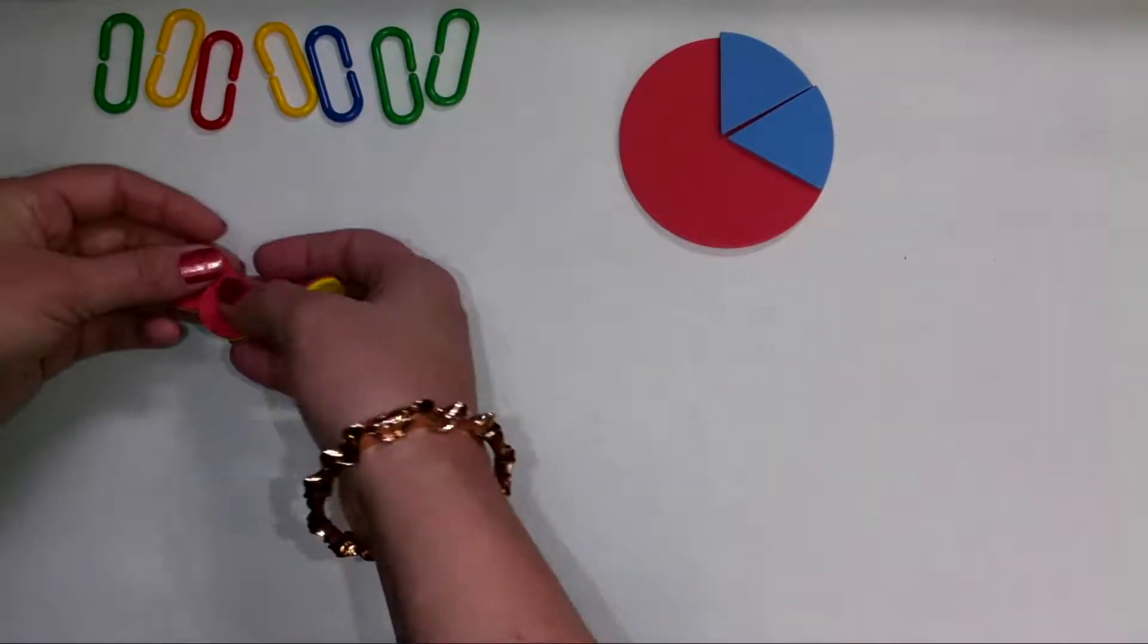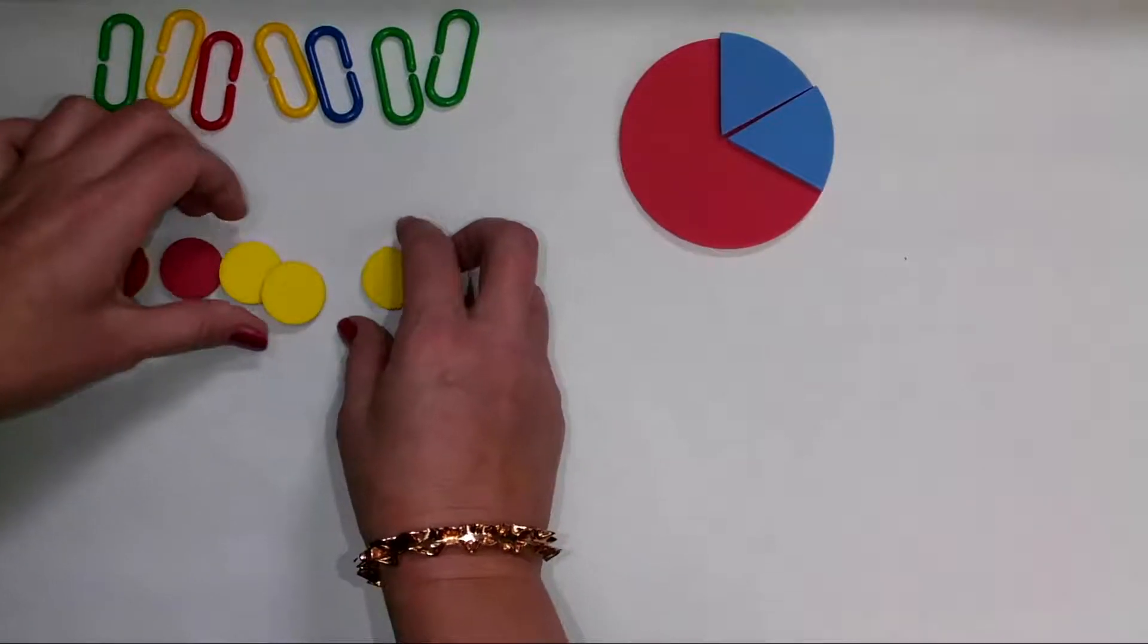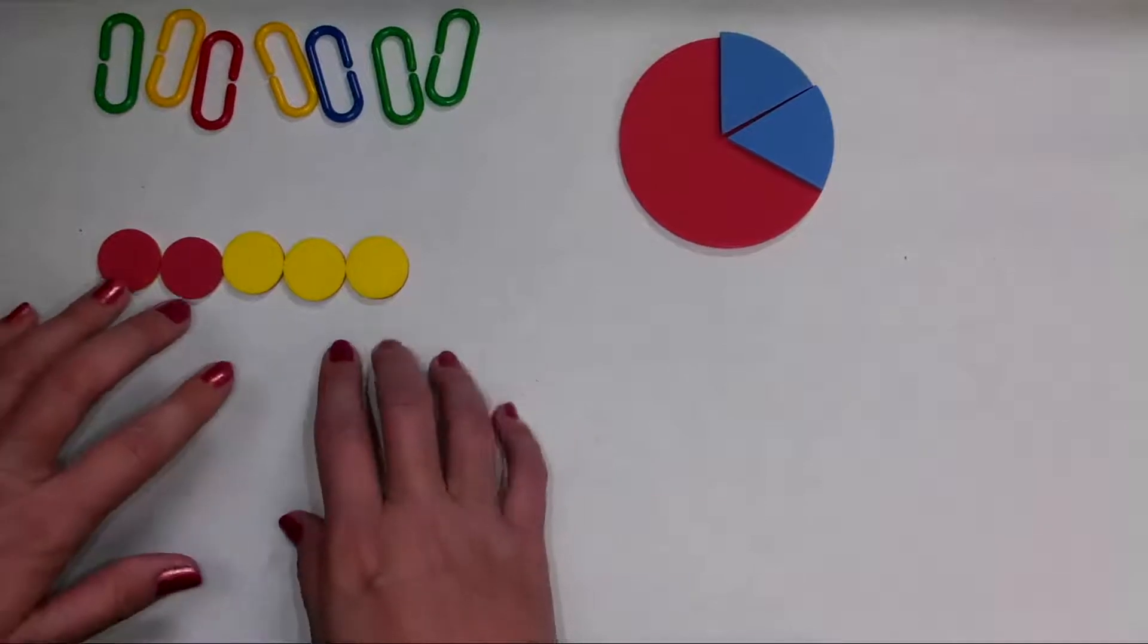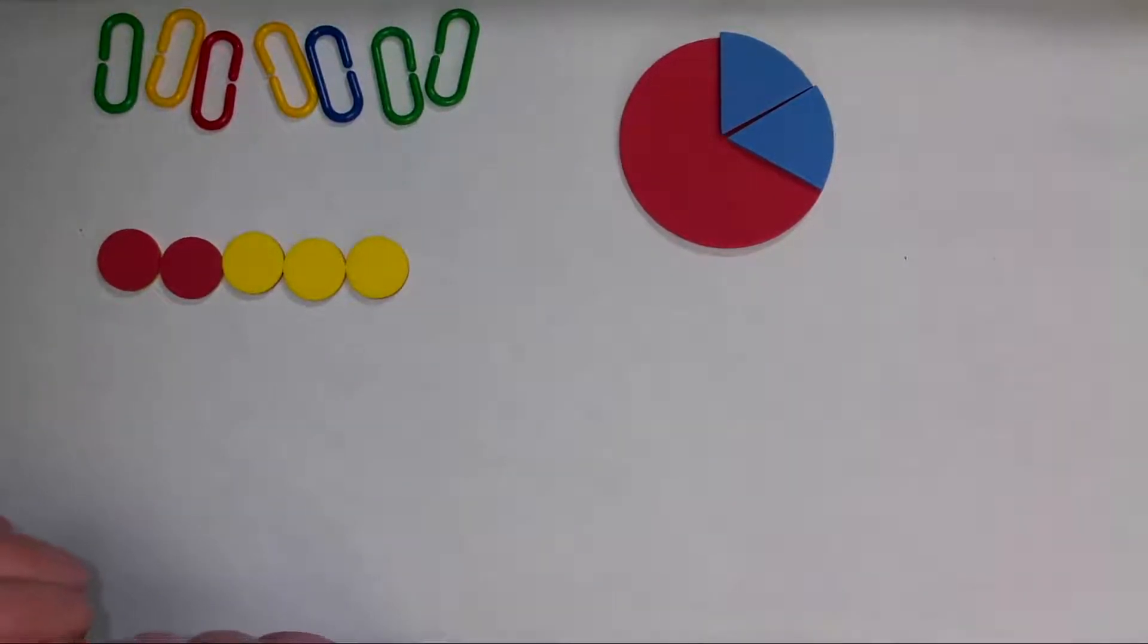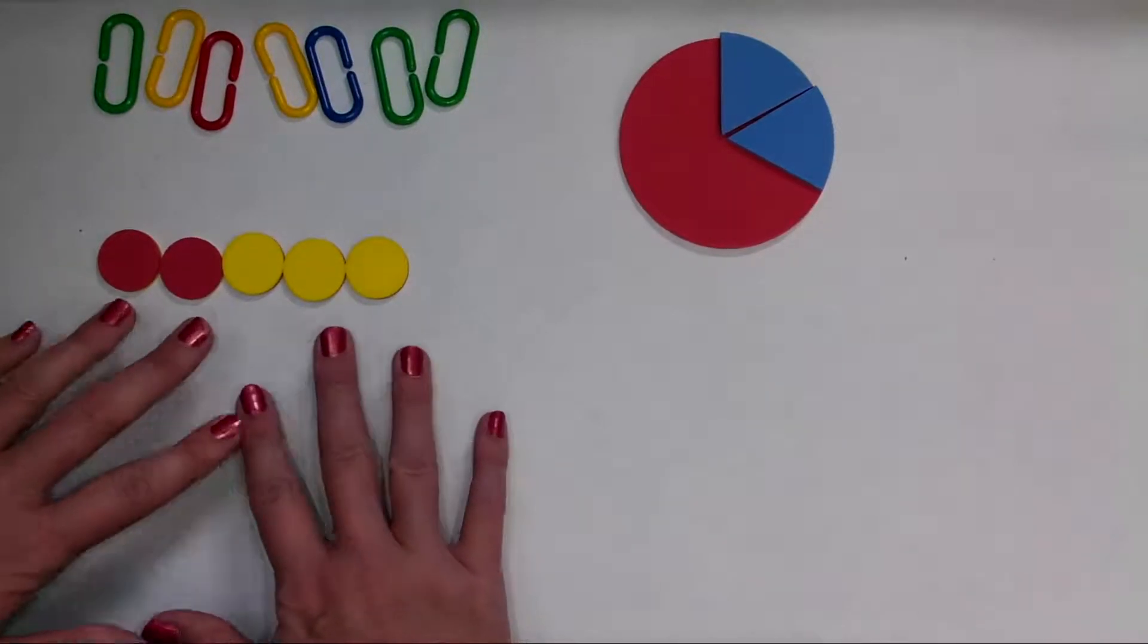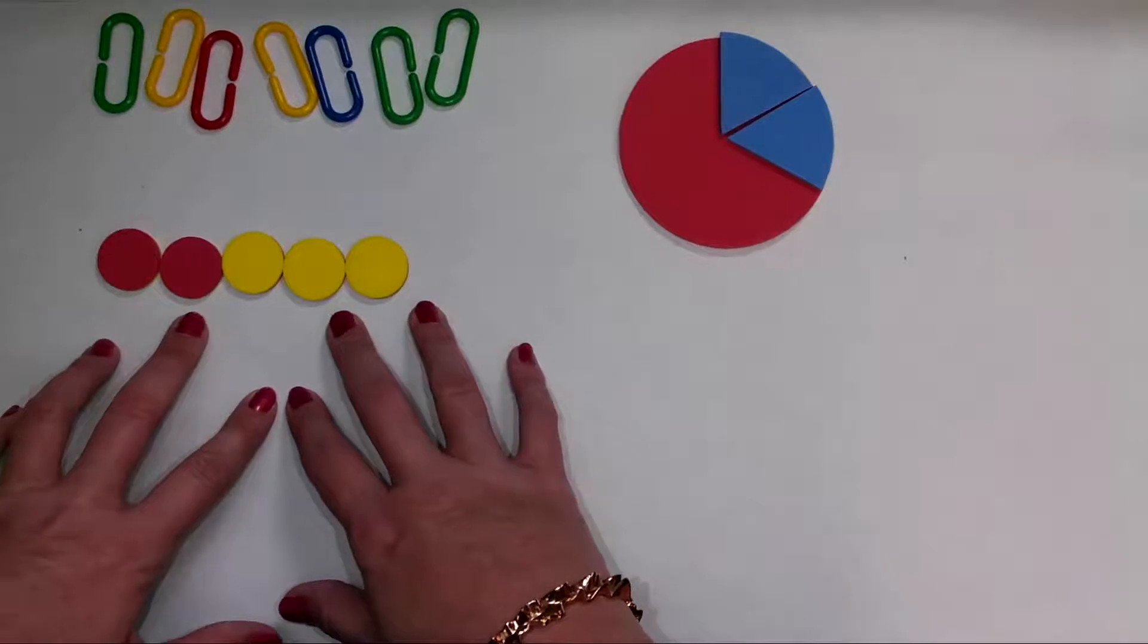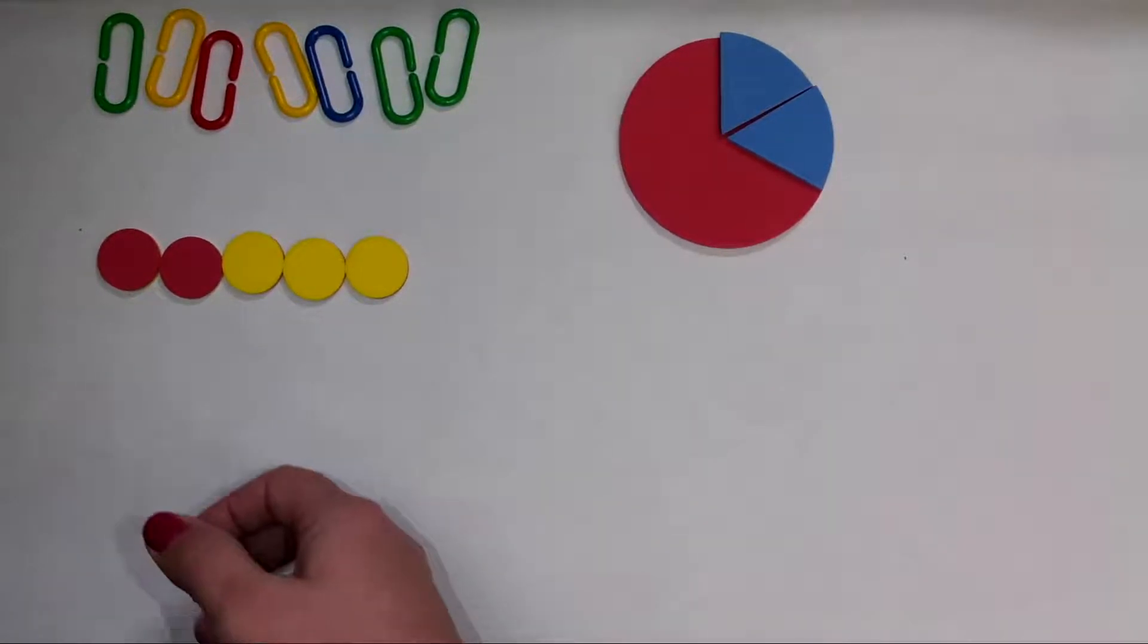Here are these concrete two-color counters. They are red on one side and yellow on the other side. And if I flip them just like that, I can show the fraction two-fifths as a set of counters. Two of them are red of the five counters. So that shows the fraction two-fifths. These are also great for helping students understand what it means to add and subtract positive and negative integers. I like a lot of these manipulatives that are multifaceted.